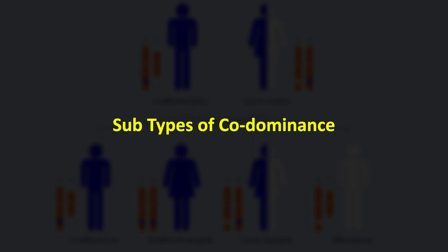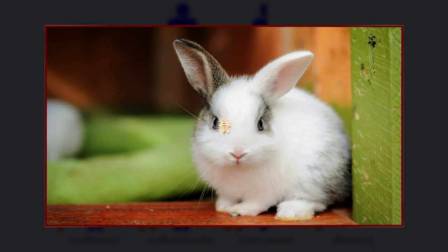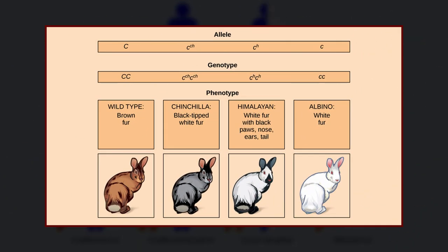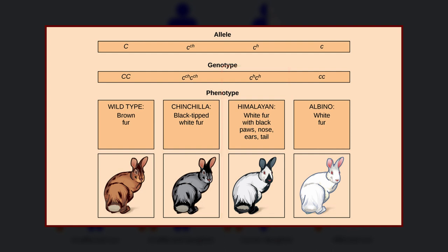Let's discuss the subtypes of codominance. First, multiple allelism or multiple alleles. Some populations show the presence of multiple alleles of one gene. For example, in rabbits there is a C gene that defines coat color. There are four common alleles: capital C giving black or brown fur; capital C, small ch giving gray fur color, also known as chinchilla coloration; ch giving white body fur and dark ears, face, feet and tail; and small c, small c (recessive) giving pure white fur and reddish eyes as a result of albinism.